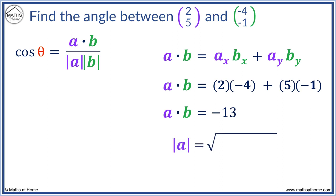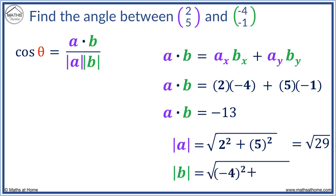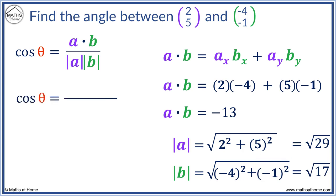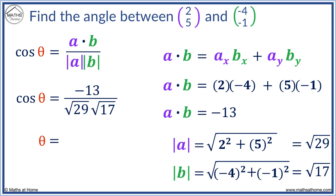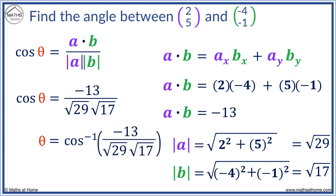The magnitude of a is found by Pythagoras with 2 squared plus 5 squared: 2 squared equals 4 and 5 squared equals 25, giving the square root of 29. The magnitude of b equals the square root of minus 4 squared plus minus 1 squared: 16 plus 1 equals 17, so the square root of 17. a dot b equals minus 13, the magnitude of a equals the square root of 29, and the magnitude of b equals the square root of 17. To find theta we use inverse cos, which gives us 126 degrees.